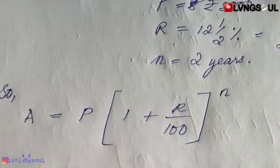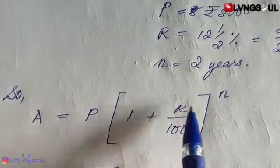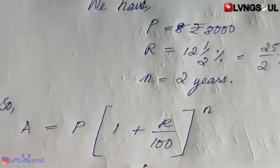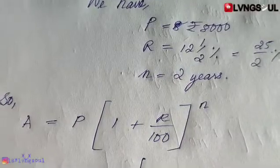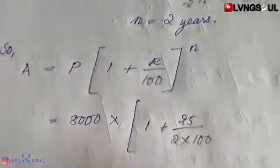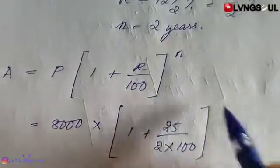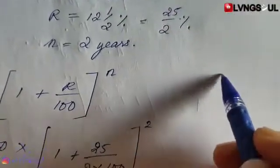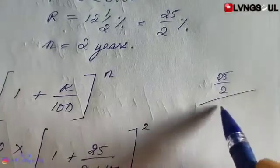Amount equals principle into 1 plus R by 100 over time. So 1 plus 25 by 2 into 100, squared. That gives 25 by 2 by 100 — simplifying 25 by 200.